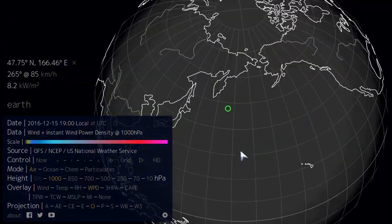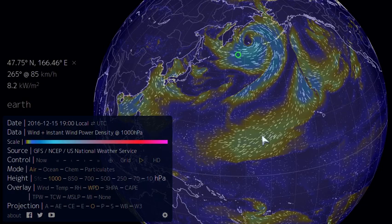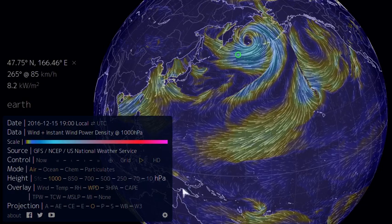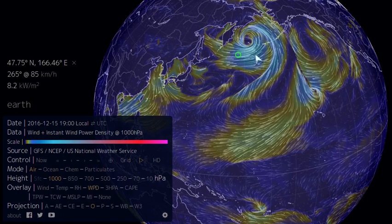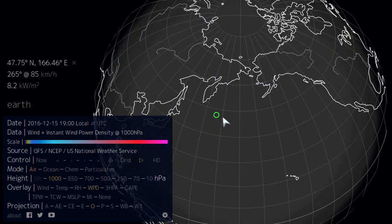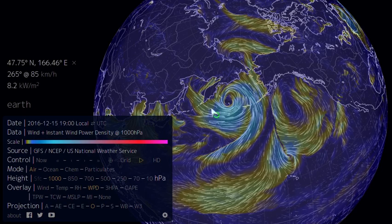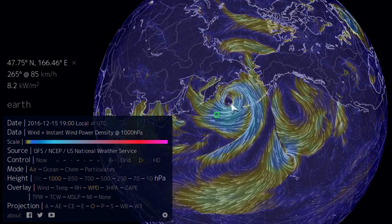Zooming out, we can get a sense of what the wind power density looks like on a global scale. For example, up here in the subarctic region, we have these extratropical cyclones forming. These are weather patterns happening near the surface.